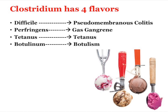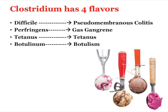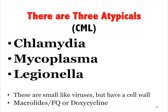Clostridium comes in four flavors — it's a gram-positive anaerobic spore former. It causes four diseases: difficile, perfringens, tetani, and botulinum. There are three atypical organisms — CML: Chlamydia, Mycoplasma, and Legionella. They're small like viruses but they have a cell wall, so you can kill them with antibiotics — macrolides, fluoroquinolones, or doxycycline.